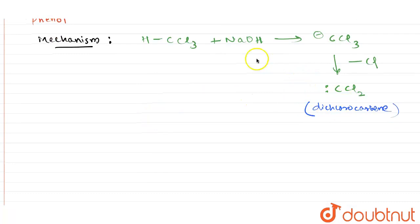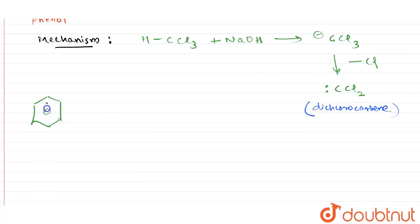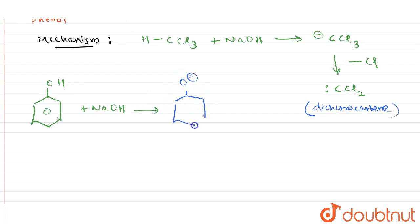To see the full reaction mechanism: first, we have obtained dichlorocarbene (CCl2). The phenol group reacts with sodium hydroxide to give the phenoxide ion (O⁻). This phenoxide ion then reacts with CCl2 — the dichlorocarbene — and the negative charge shifts onto the carbon bearing CCl2.